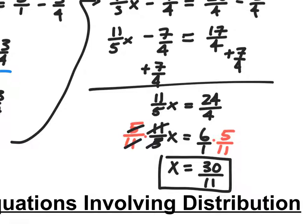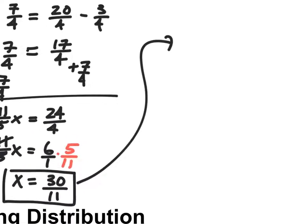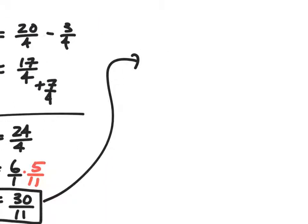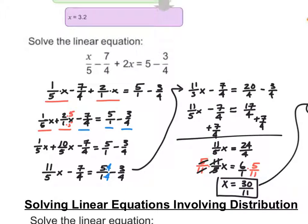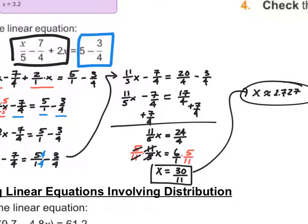Thirty elevenths as a decimal is approximately 2.727. If you graphed both equations in Desmos, they'd intersect at x equals 2.727. We want our answers in fraction form — fractions are our friend. So x equals thirty elevenths.